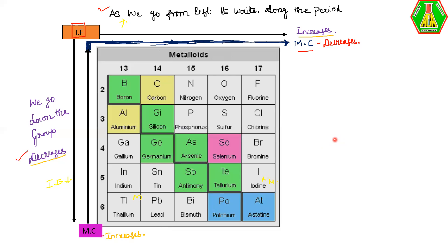Just compare the metallic character of group 13 elements: the first element is boron and the last element is thallium. Comparing one to another, the metallic character increases — thallium has the greatest metallic character compared to boron. This is a simple concept and a small explanation of P-block elements, which continues in the next video. Thank you for watching.